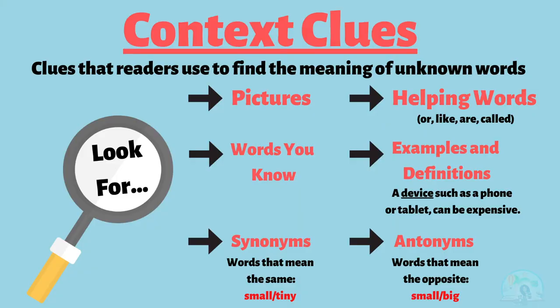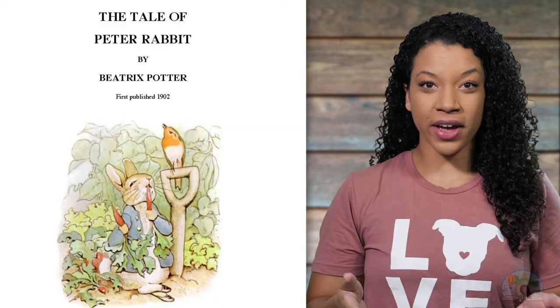Hello, and welcome to Storytime with Tristan. Join me today as we read the tale of Peter Rabbit and practice using context clues to help us understand unknown words. Context clues help us to understand the words in our story that we may not know the meaning of. There are a few clues that authors give us, like looking at the pictures, using helping words, using words you already know, looking at examples and definitions, using synonyms and antonyms. Let's practice using context clues together with The Tale of Peter Rabbit, written by Beatrice Potter.